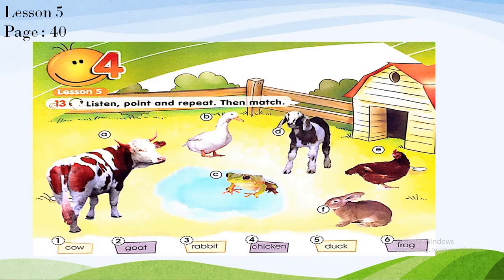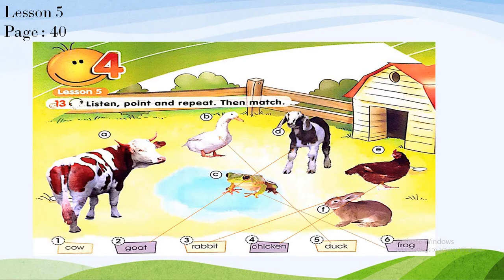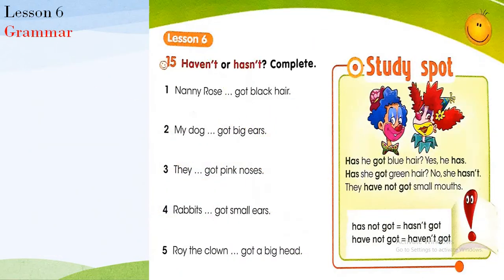As you can see in the pictures, we studied the names of animals. We have cow, goat, rabbit, chicken, duck, and frog. Again, listen and repeat: goat, rabbit, chicken, duck, frog, and cow.